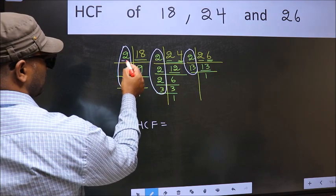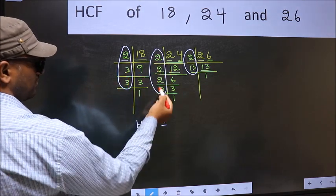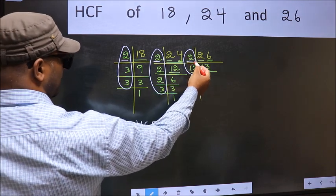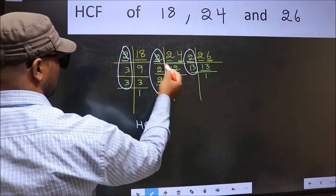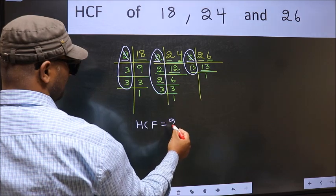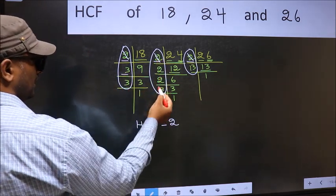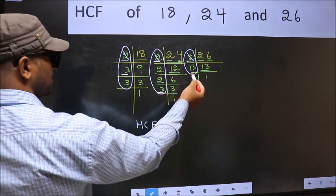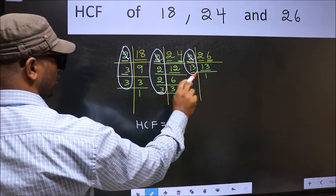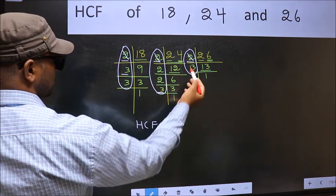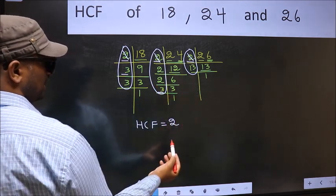Starting with the number 2. Do we have 2 here? Yes. Go to the next place. Do we have 2 here? Yes. So, cut 2 right here. Next number 3. Do we have 3 here? Yes. Go to the next place. Do we have 3 here? No. 3 is not present in all the 3 places. So, we should not write here.